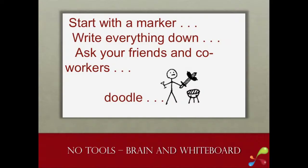There are no tools — well, there's a whiteboard and a whiteboard marker and your brain. Start with a marker, write everything down, and by all means ask your coworkers and your friends. What happens at Distilled when we want to come up with content: we grab two or three people, sit in front of a whiteboard, and write everything down. Everything. Nothing is a stupid idea when you're brainstorming. Doodle, draw arrows, draw pictures.